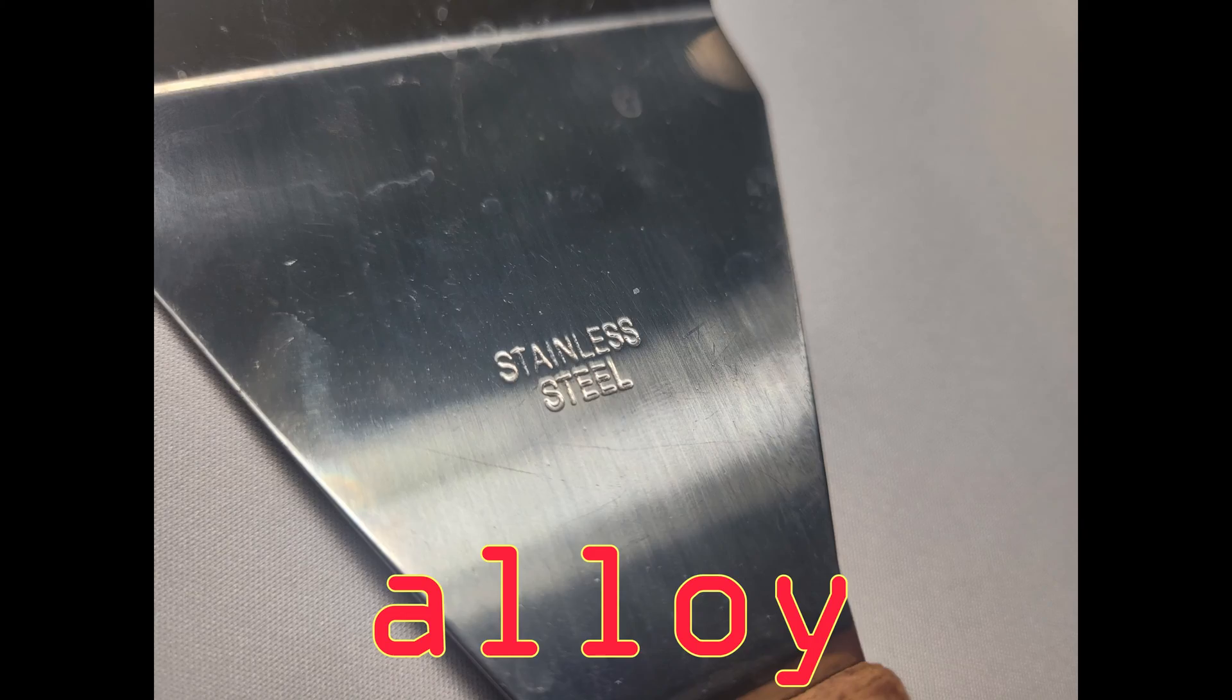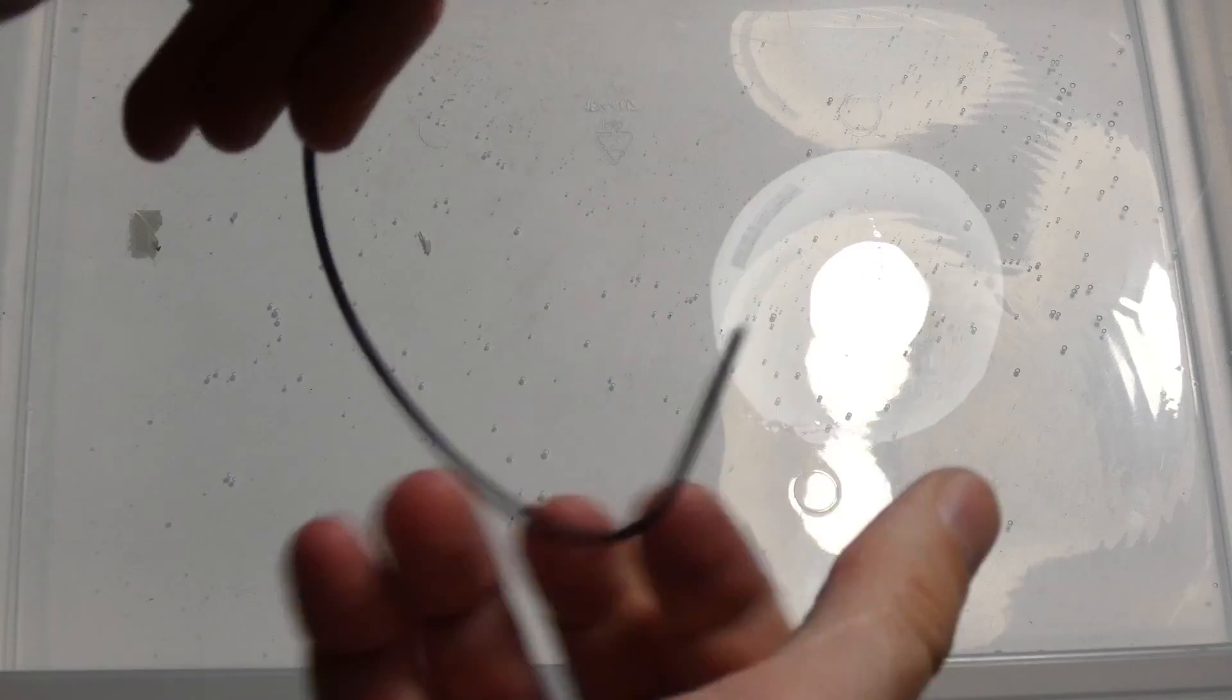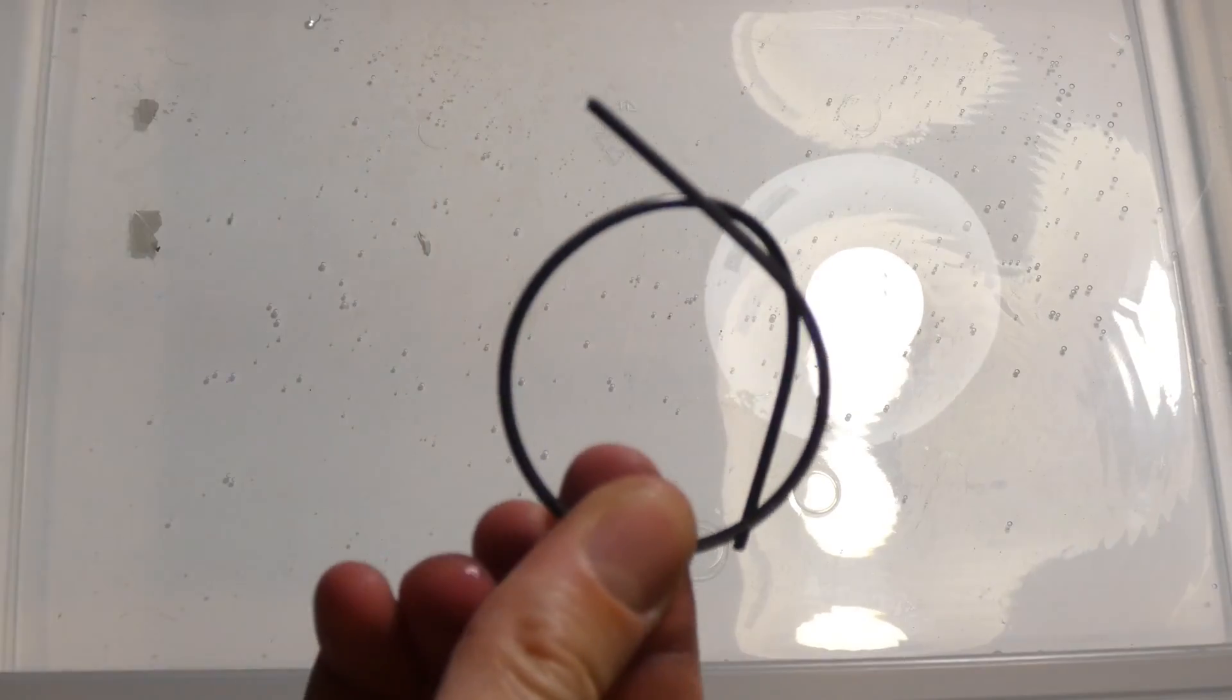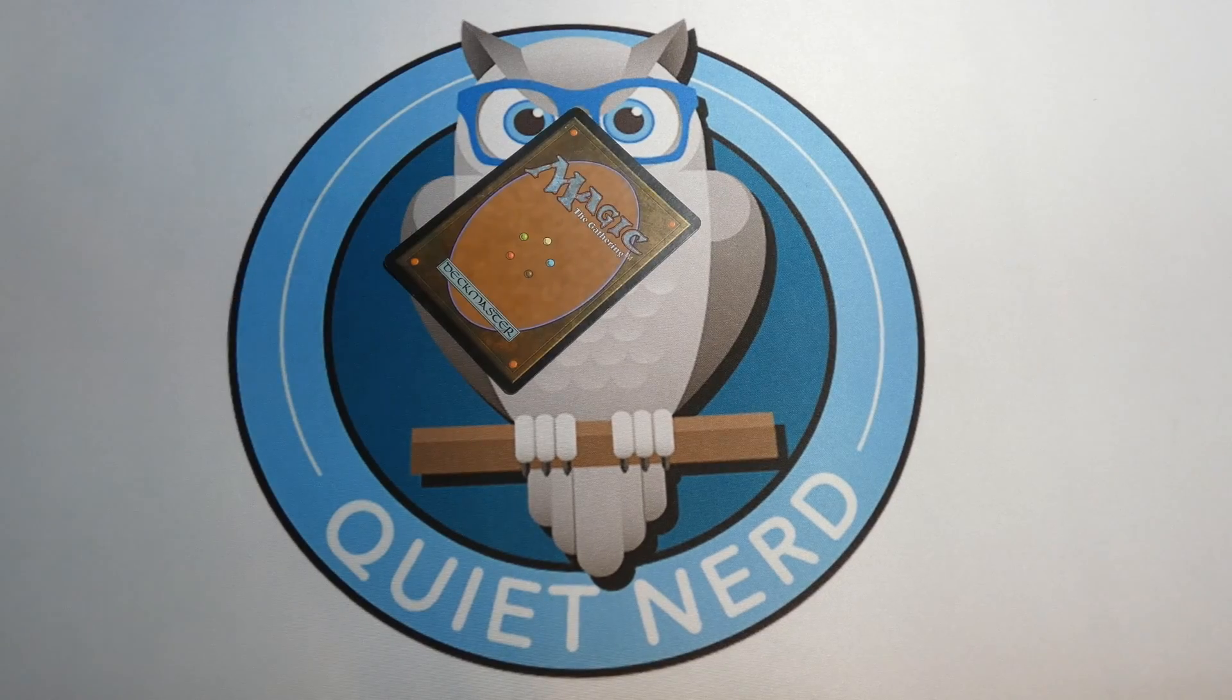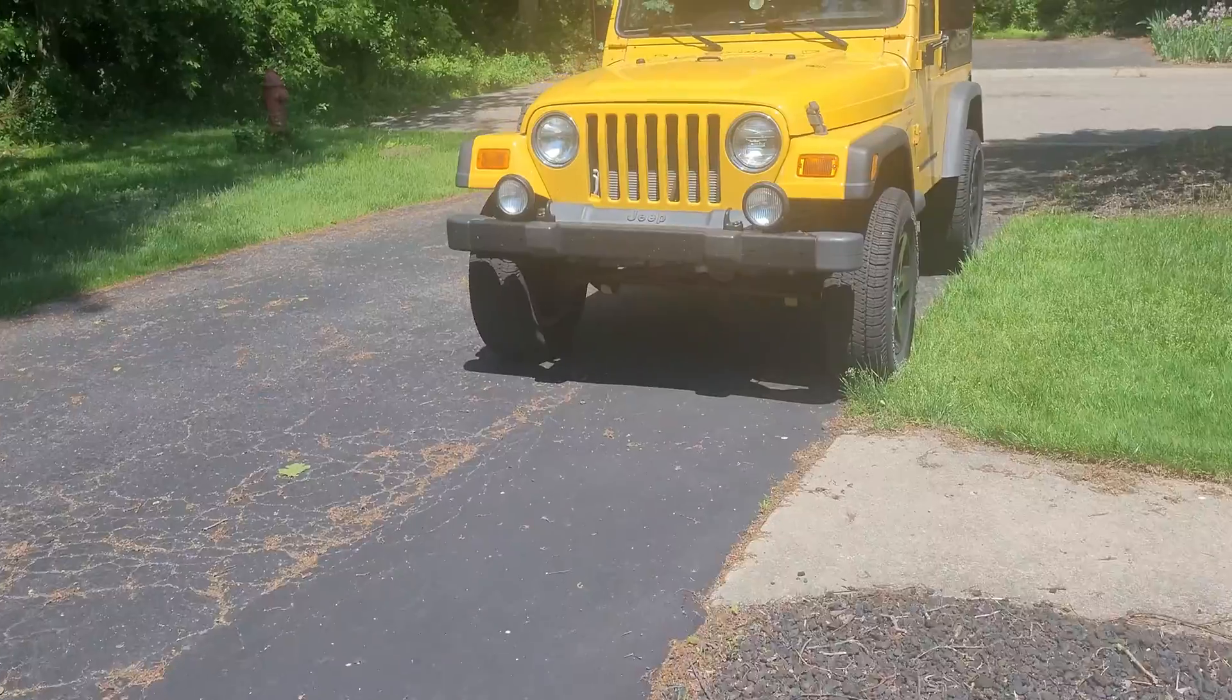It's a shape memory alloy, and what that means is you can take this wire, bend it up however much you'd like, then once you give a little bit of heat it just returns to the shape it was formed at. And that to me is just like magic. So ever since I found out about this stuff...